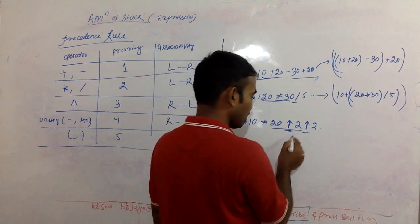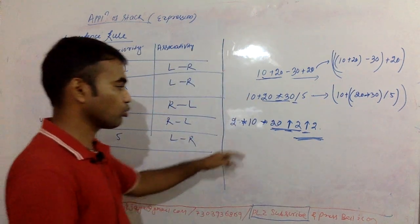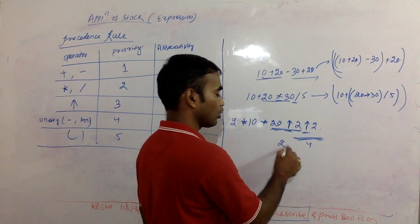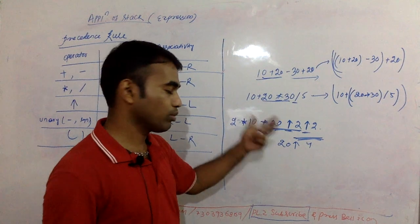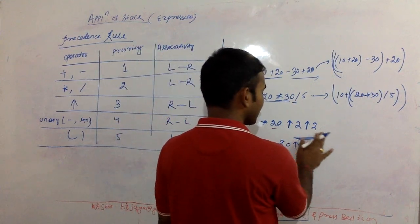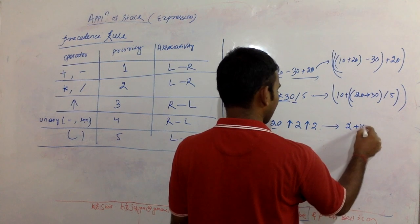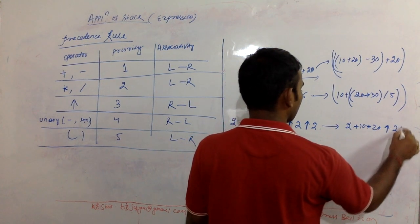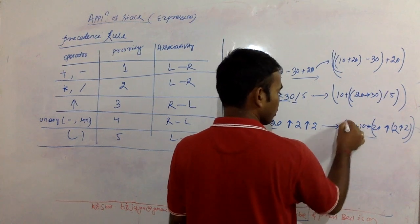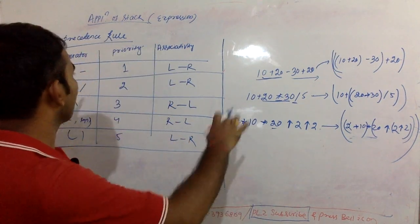Now there are two power operators — which one do we evaluate first? We look at associativity. For power, we evaluate right to left, so 2 to the power 2 equals 4 first, then 20 to the power 4. If you do it the other way, you get a wrong answer. So when putting brackets: the innermost power bracket goes first (2 raised to 2), then the next power, then the multiplications left to right.